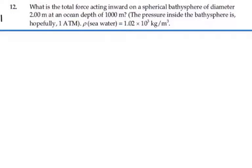Here's problem 14.12. What is the total force acting inward on a spherical bathysphere of diameter 2 meters at an ocean depth of 1,000 meters? The pressure inside the bathysphere is hopefully 1 atmosphere. The density of seawater is 1.02 times 10 to the 3 kilograms per meter cubed.